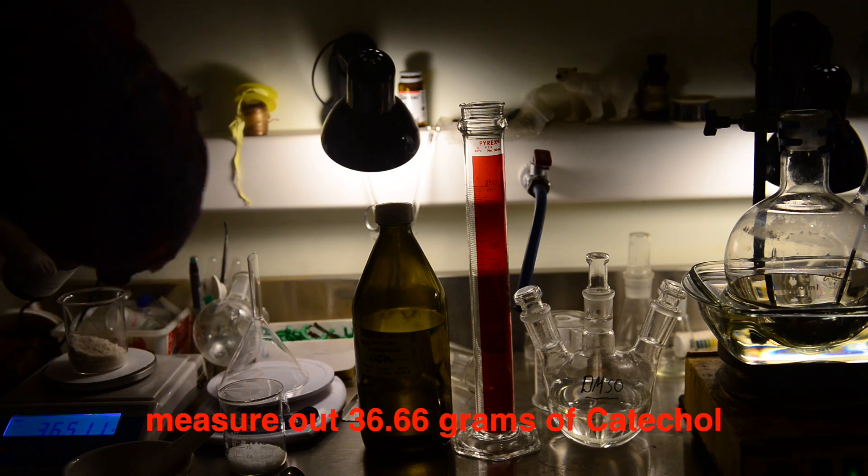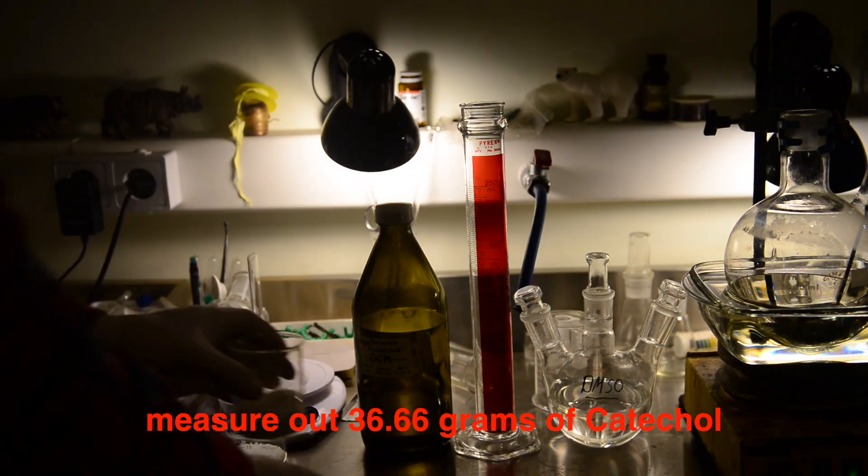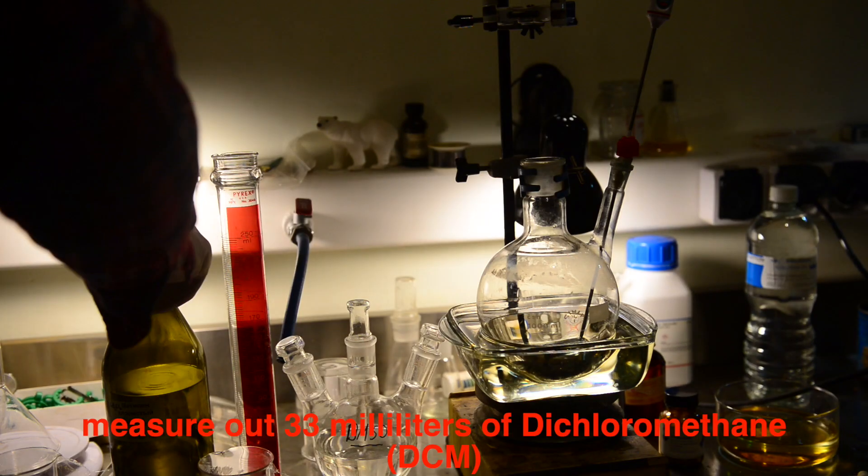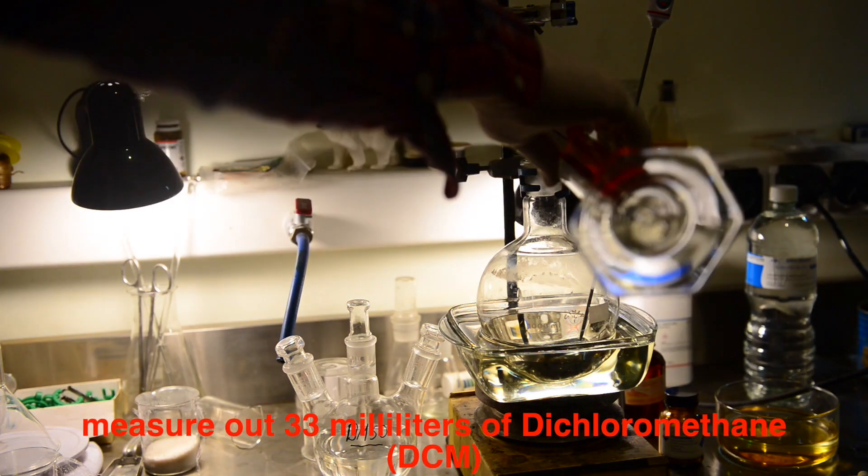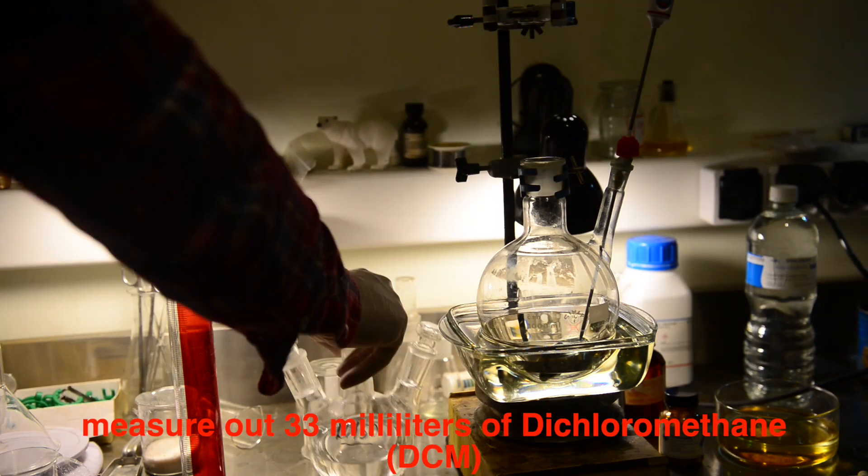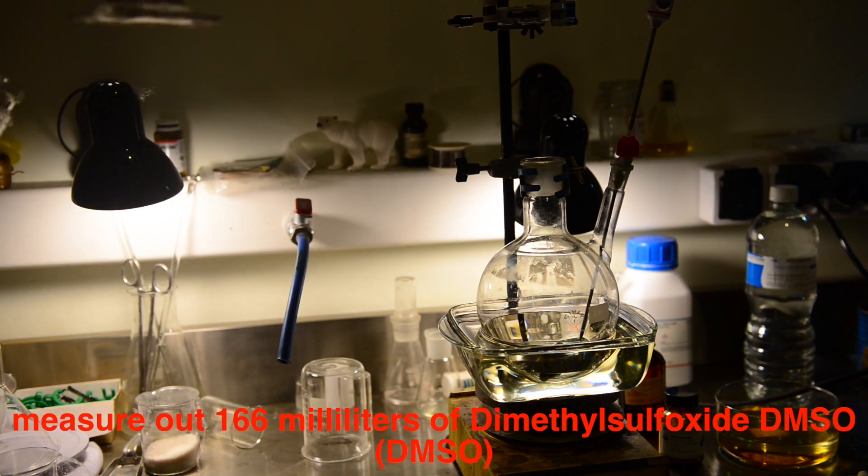We weighed out 36.66 grams of catechol. To a 2-neck, 1-liter round-bottom flask was charged 33 milliliters of dichloromethane and 166 milliliters of DMSO, dimethyl sulfoxide. We discussed in our previous video where to get and how to purify the DMSO solvent.